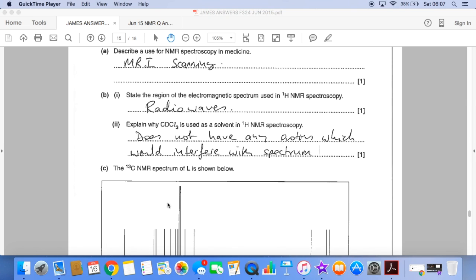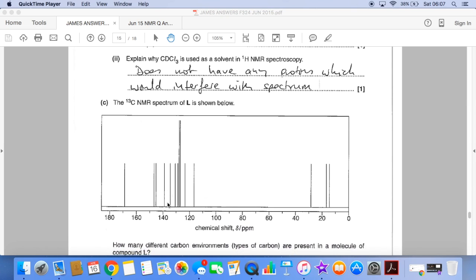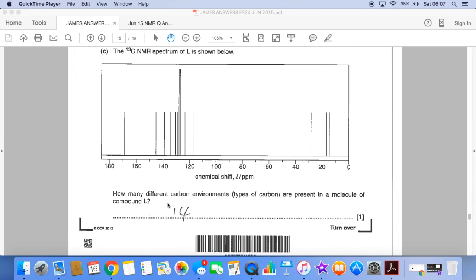The carbon-13 spectrum, all you had to do was count the peaks. There's 14 peaks, and so there were 14 carbon environments. Now that's going to have to feature in part D, so we will need to refer back to that.